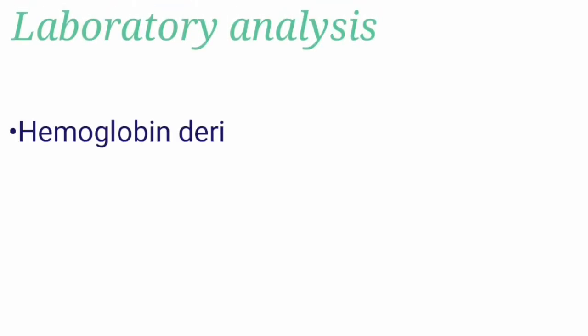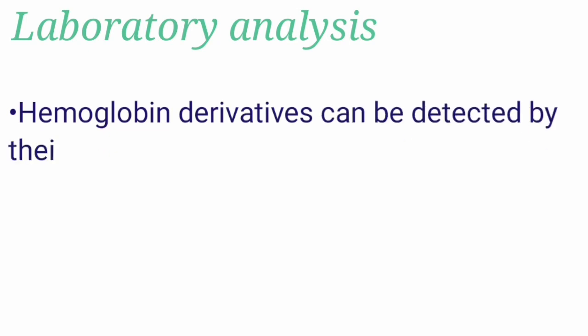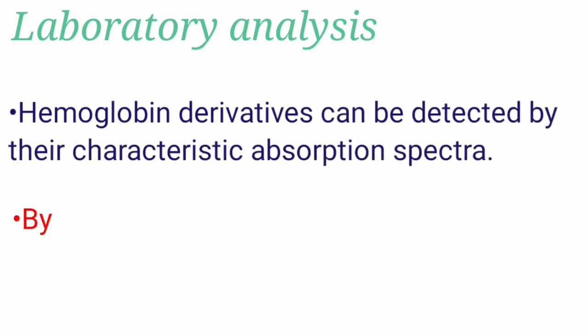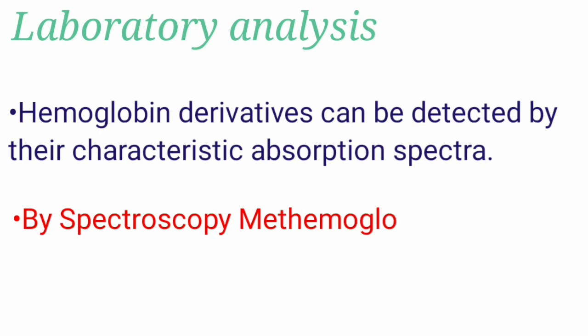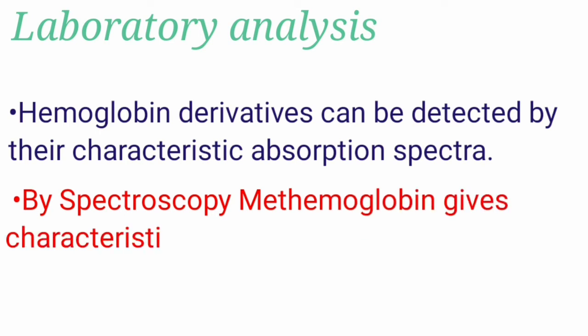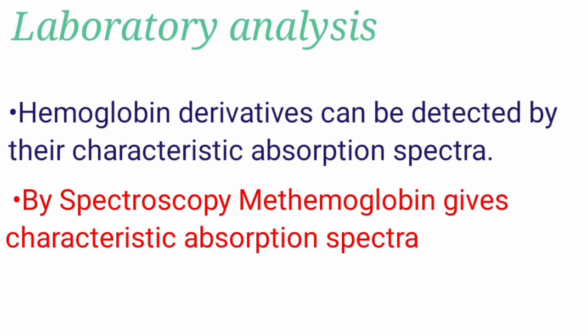Laboratory analysis: hemoglobin derivatives can be detected by their characteristic absorption spectra. By using spectroscopy, methemoglobin can be analyzed due to its characteristic absorption spectra.